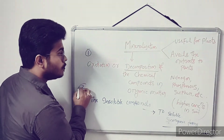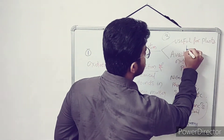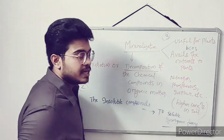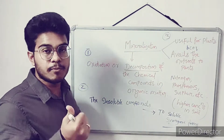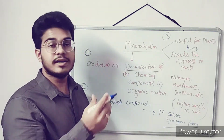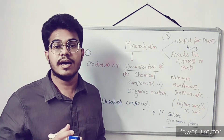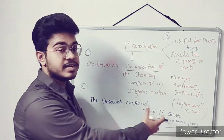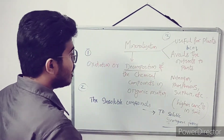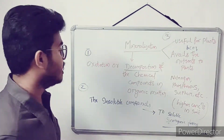This is point number one, and it's useful for the plants because it makes nutrients available to plants. Generally there is a thumb rule we will be discussing later — like how mineralization occurs, what is the concentration, or what is the effect of concentration of different nutrients during mineralization. This is the first topic: mineralization. Now moving on to immobilization.